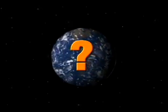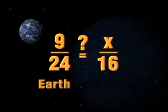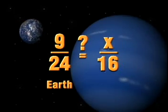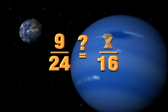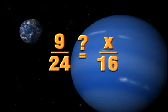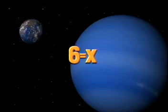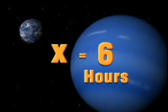Teachers, now is a good time to pause the program. You should have set up a proportion that states 9 over 24 hours on Earth is equivalent to X over 16 hours on Neptune. We use the variable X for the amount of sleep hours since we don't know the value yet. Next, we cross-multiply. Find the products on both sides of the equation and solve for X. X equals 6. In order for Norbert to sleep 3/8, or 9/24ths of his day, while on Neptune, he should sleep about 6 hours.